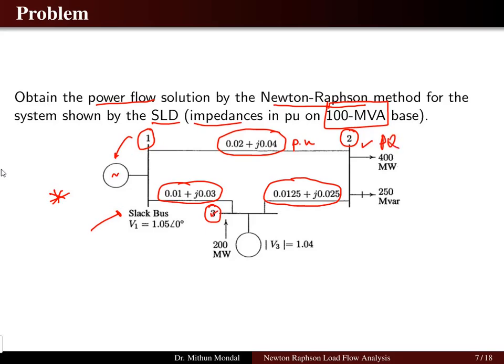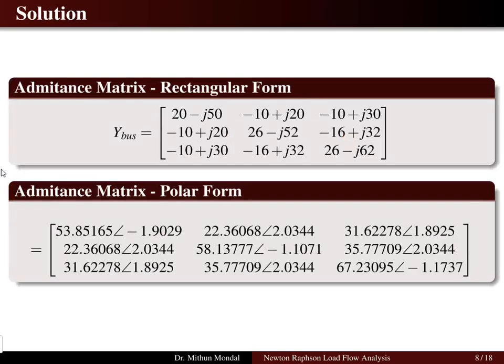Bus 3 has power delivered, so it is also a generator bus. One generator bus must be treated as the slack bus. Out of buses 1 and 3, one is designated the slack bus. In this problem, bus 1 is the slack bus with voltage magnitude 1.05 per unit and angle 0. Let us now solve this problem using Newton-Raphson.